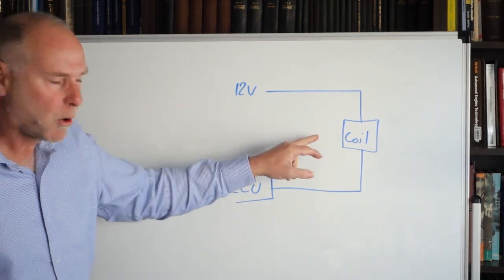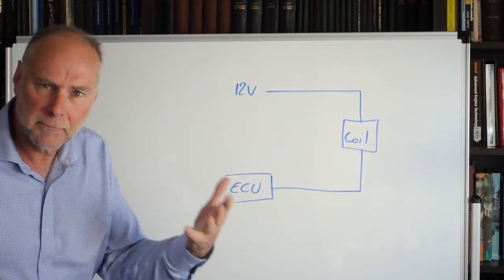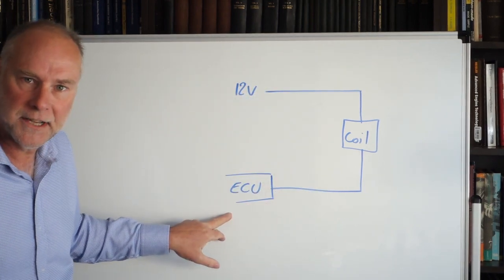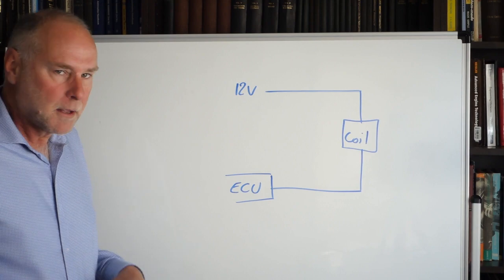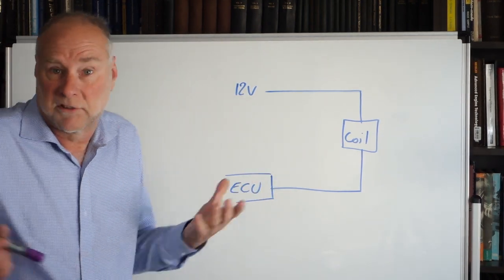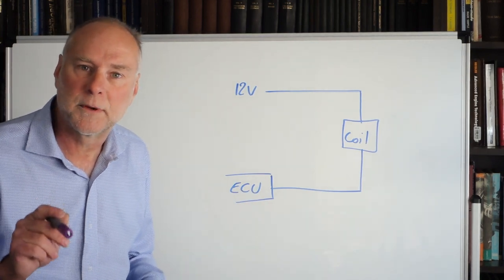Let's have a look here. We've got a coil, that might be a solenoid, that might be a relay coil, it's fed 12 volts and then the ECU grounds the other side, switching it on. ECU connects to ground, coil is switched on. But what happens when it gets switched off?